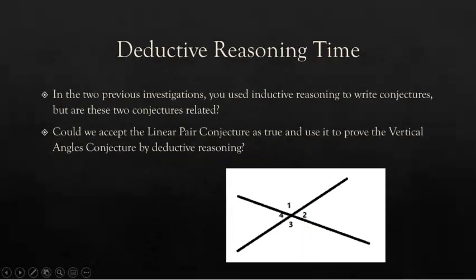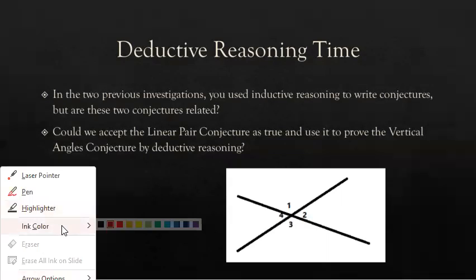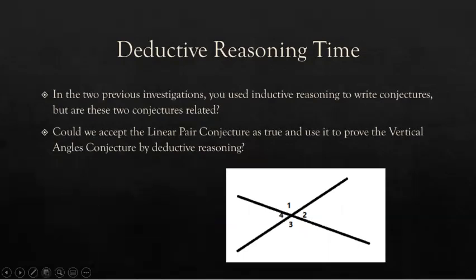So we've been using these investigations and our inductive reasoning to write conjectures. But do you think these two conjectures are related? Could we, if we accept the linear pair conjecture as true, use it to prove the vertical angles conjecture by deductive reasoning? Remember that inductive reasoning was looking at different cases and drawing a conclusion. Deductive reasoning would be to reason out from one to another, to give the why. Let's look at this set of vertical angles and see if we can come up with a method to prove the vertical angles conjecture.